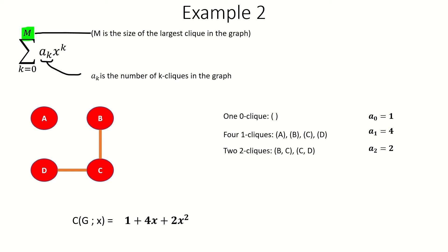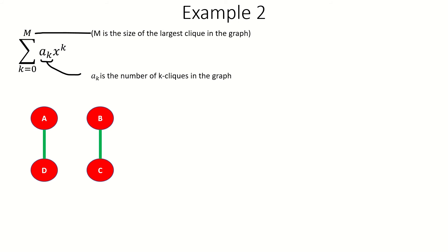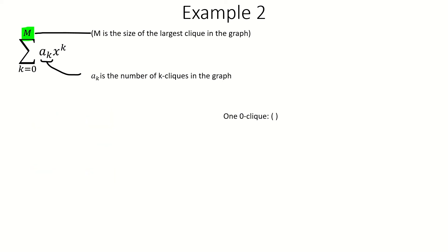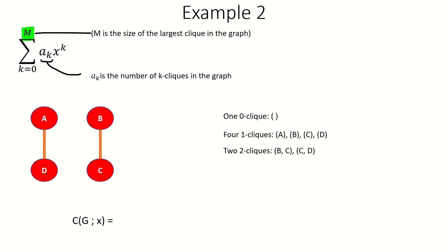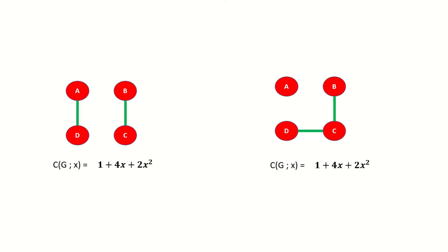See how the coefficients count the number of cliques of a given size in a graph? Now for one final example. The largest clique in this graph is a 2-clique, meaning that m is 2. The graph has one 0-clique, four 1-cliques, and two 2-cliques. Its clique polynomial, then, is 1 plus 4x plus 2x squared. Wasn't that the clique polynomial of the previous graph? Yes, it was, and this shows us that two non-isomorphic graphs can have the same clique polynomial.